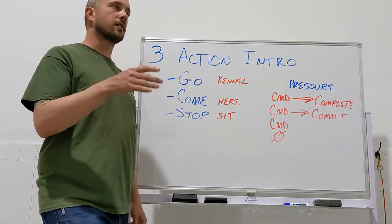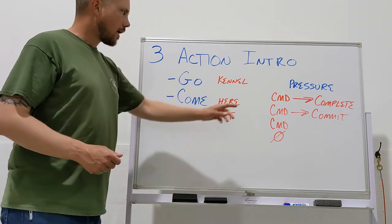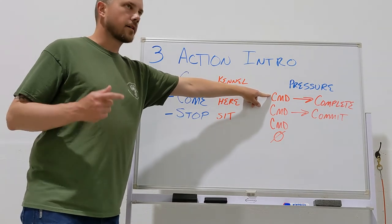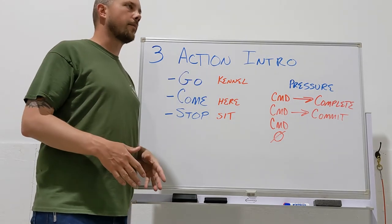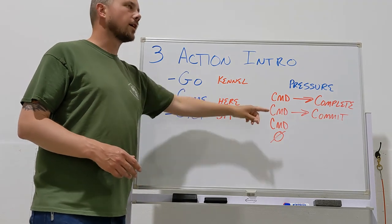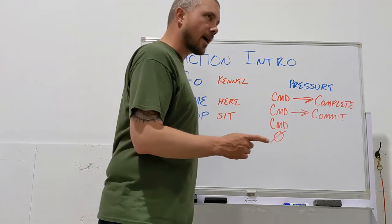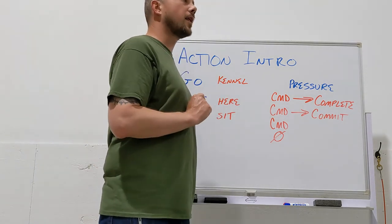So what that might look like when we're talking about kennel, which is going to be the first thing we work on, is at this phase, we're saying kennel, and we're applying that stimulation until all four feet are up on the table. When we get here, we're saying kennel, and as soon as he takes a step in the right direction, we're going to stop applying pressure.